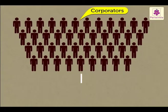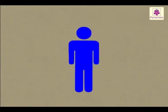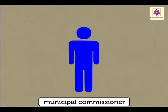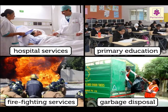The Corporators elect the Mayor and the Deputy Mayor from amongst themselves. The State Government appoints an officer who helps in carrying out the functions of the Municipal Corporation. He is called a Municipal Commissioner. The Municipal Corporation carries out the same functions as the Municipal Council.